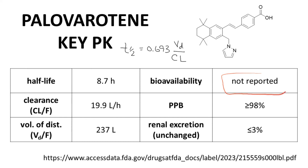The bioavailability for palaveratine is unknown in humans, though it is almost certainly known for some preclinical animal species. Plasma protein binding is high. Renal excretion is not explicitly reported in the prescribing information. In a mass balance study, only 3% of the drug was observed in the urine, with the text unclear on whether the material was parent drug or metabolites. In either case, unchanged renal excretion is quite low. Over 95% of the drug is excreted in the feces, so biliary excretion is likely the primary route of excretion.